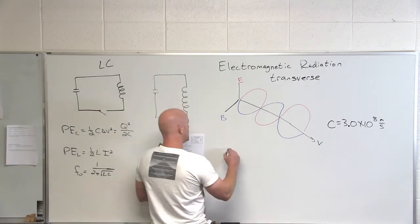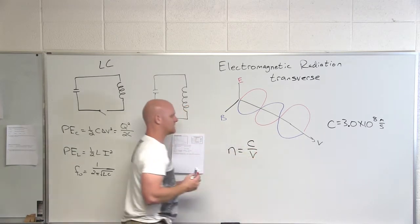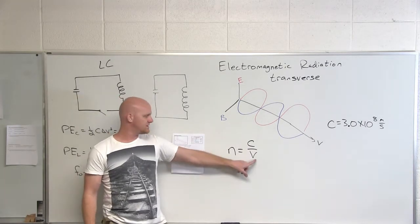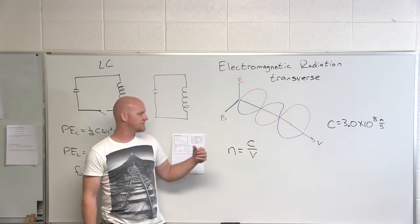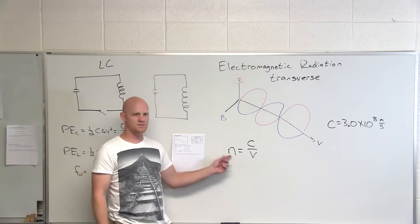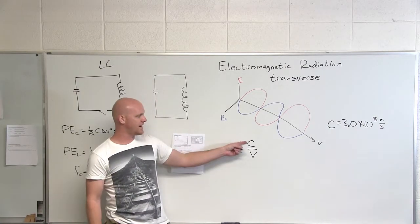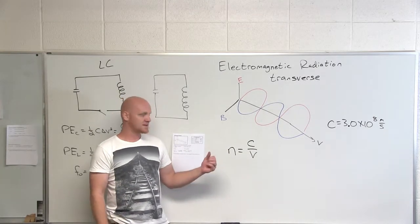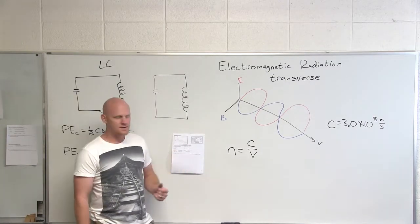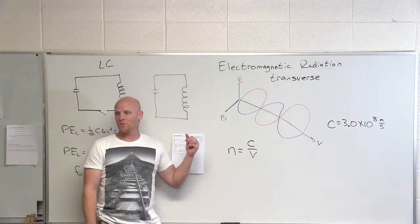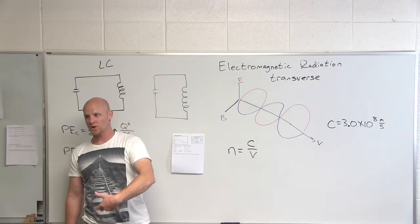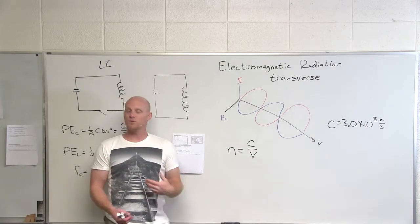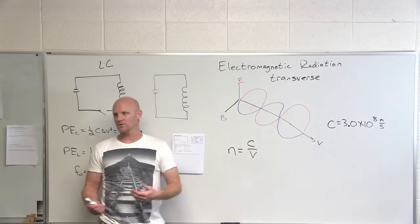Light slows down in other materials. We define an index of refraction for these materials using n = C/v, where C is the speed of light in a vacuum and v is the velocity in the new medium. Since the speed of light always slows down relative to a vacuum, the indices of refraction are always greater than one. Air is like 1.008, close to one. Water is 1.33, meaning light travels 1.33 times slower in water than in a vacuum. For certain types of glass, the index of refraction is 1.5.